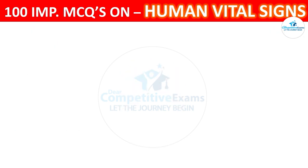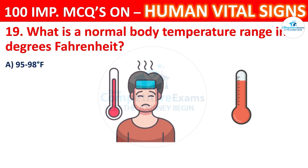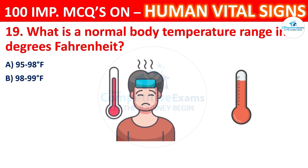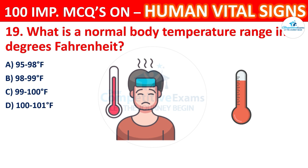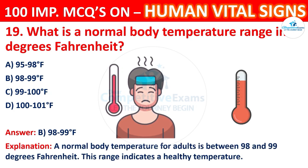Question 19: What is the normal body temperature range in degrees Fahrenheit? Options: 95 to 98°F, 98 to 99°F, 99 to 100°F, or 100 to 101°F. The correct answer is 98 to 99 degrees Fahrenheit. A normal body temperature for adults is between 98 to 99°F. This range indicates a healthy temperature.